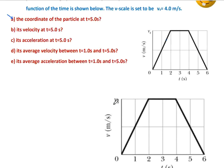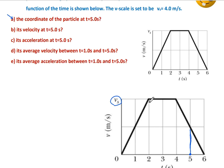We have a graph between velocity and time. At time 5 seconds, this area represents displacement. Displacement in a v-time graph equals the area under the line. We will divide this area into geometric shapes: one, two, three, four.